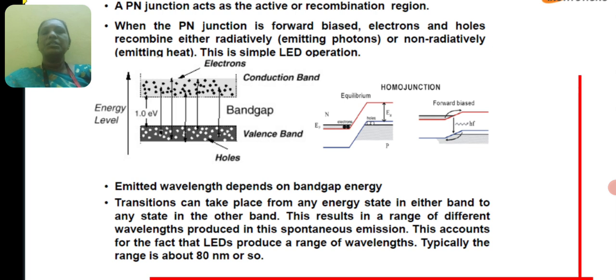Transitions can take place from any energy state in either band to any state in the other band. This results in a range of different wavelengths produced in this spontaneous emission. This accounts for the fact that LEDs produce a range of wavelengths. Typically, it is about 80 nanometer.